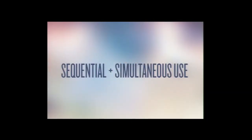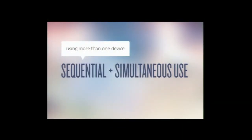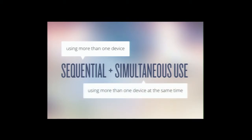Another important piece of context is how people are using the web. Sequential and simultaneous browsing are becoming more commonplace in nations that have been online for a while. Sequential simply means using more than one device to access content; simultaneous means using more than one device at the same time. Thinking about consistency and delivering a consistent experience becomes really important because this kind of browsing represents how people with multiple devices will be using the web.